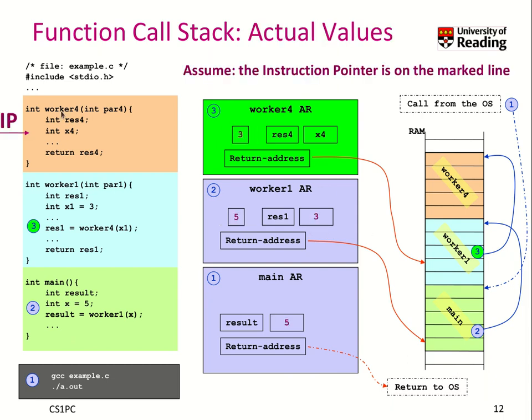Let's assume our instruction pointer is now in worker 4, so we have started here in main, calling worker 1, then we executed whatever lines are here, calling worker 4, now we are in this line. So, what are the actual values?